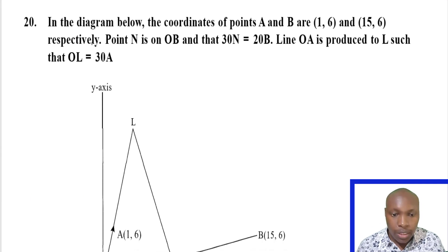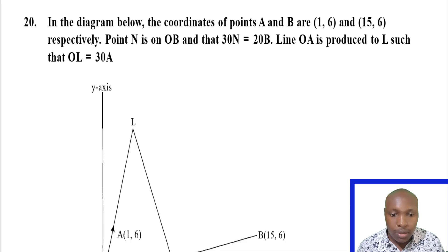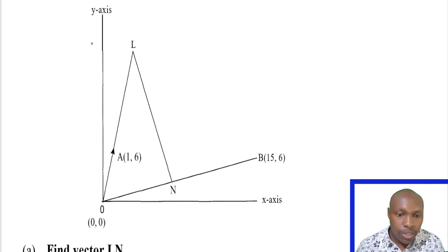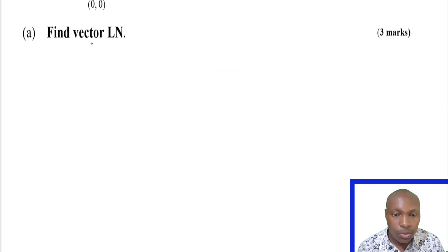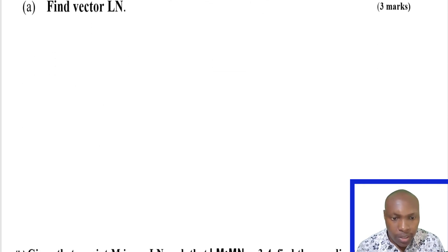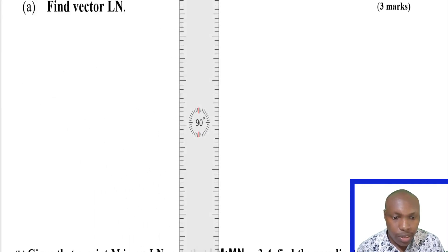Welcome. Vectors KCC 2016, question number 20. The question reads: in the diagram below, the coordinates of point A are 1, 6; B is 1, 6; and 15, 6 respectively. Point N is on OB such that 3ON equals OB. Line OA is produced to L such that OL equals 3OA. So there is the diagram — you can see where A, B, and C are.